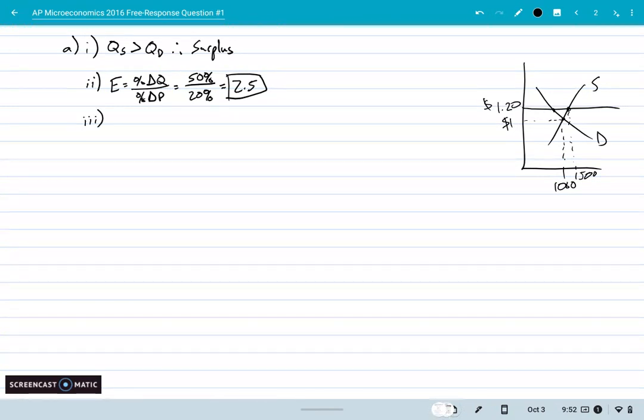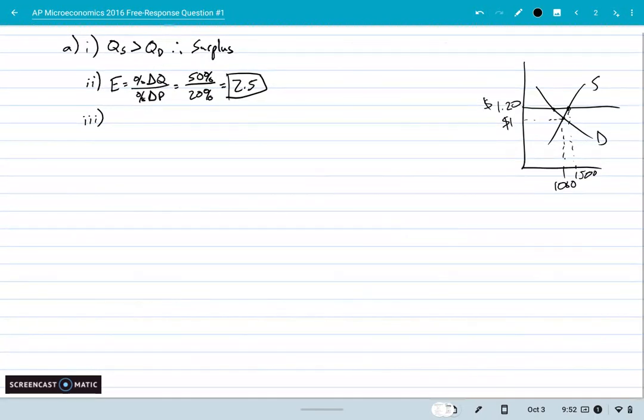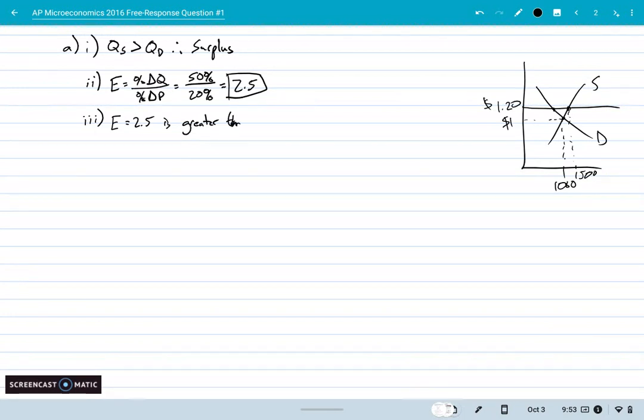Part three. By the way, I did say show your work, so I did write the whole thing out there. Between $1 and $1.20, is it elastic, unit elastic, or inelastic? Well, my E equals 2.5 is greater than 1. Therefore, we're going to call that elastic demand. Basically, the quantity change was much greater than the price change. That's what elastic means. I am absolutely flying through this problem. Hope that's all right with all of you all.